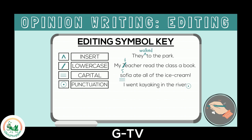Another editing symbol is for deleting a word or a longer part of your writing. You draw a squiggly line over what you want to delete. For example: 'Travis knew the the answers.' The word 'the' is repeated, so I will write a squiggly line over one of the repeated 'the's to show that I am deleting it.